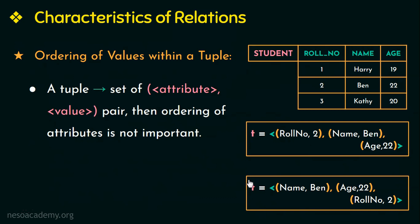Even if I change the order of these pairs, the meaning will not change. But generally we go with the first definition — that an n-tuple is an ordered list of n values — because of its simplicity. Therefore, as per the first definition, ordering of values within a tuple is necessary or important.